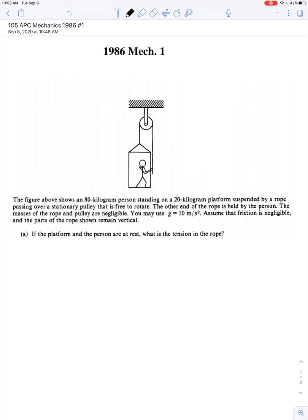So it's another elevator problem, and we're told that the person in the elevator has a mass of 80 kilograms, and he's standing on a 20 kilogram platform. So the elevator that he's in is less massive than the person himself. The elevator's mass is 20 kilograms.